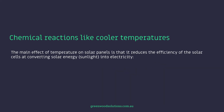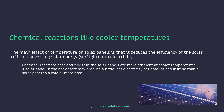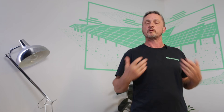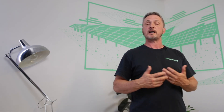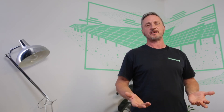The main effect of temperature on solar panels is that it reduces the efficiency of the solar cells at converting solar energy — sunlight — into electricity. Chemical reactions that occur within the solar panel are more efficient at cooler temperatures. A solar panel in the hot desert may produce a little less electricity per amount of sunlight than a solar panel in a cold climate area. This inefficiency is made up though by the greater number of sunny days in the desert. So effectively the ideal situation for a solar panel is long sun hours with a cool temperature, which unfortunately is not the case in most situations.